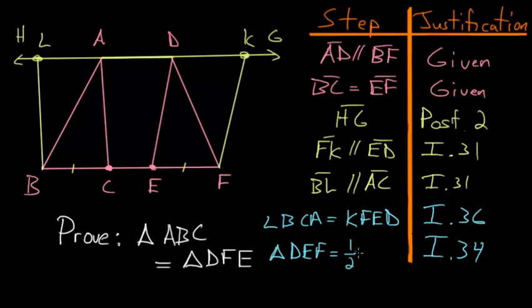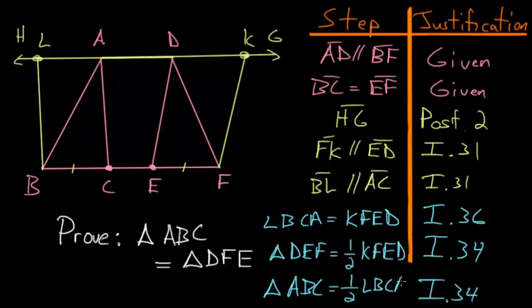And with the same argument using this Book 1, Proposition number 34, we can look at the other parallelogram, noticing that this line AB bisects it. So this triangle ABC would be half the area of this parallelogram. So triangle ABC is half of the parallelogram LBCA.